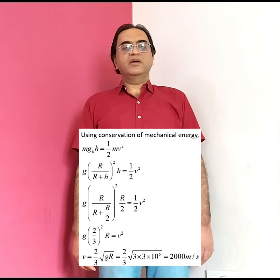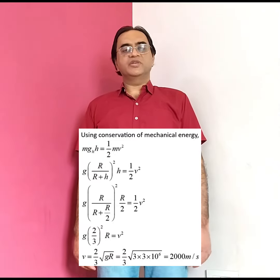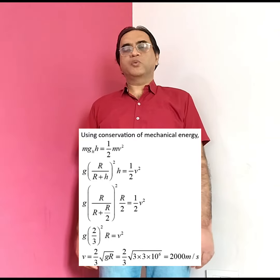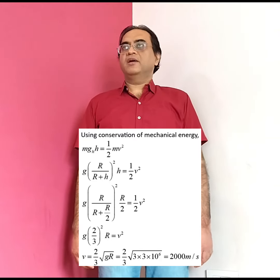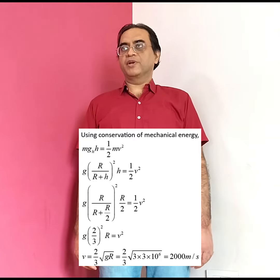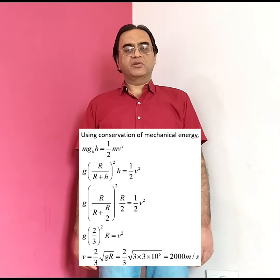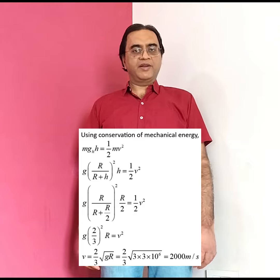Here, g at height h is g times R divided by R plus h, the whole squared. Height is 1,500 kilometers, radius is 3,000 kilometers, so h is R divided by 2.